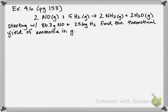That would be like if you were making cookies and you ran out of chocolate chips. You might have all of the other ingredients that you need, but if you don't have chocolate chips, then you can't make any more chocolate chip cookies. In chemistry, the limiting reactant is the reactant that produces the least amount of product, because once that reactant runs out, we can't produce any more product.